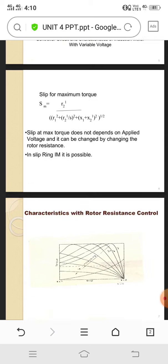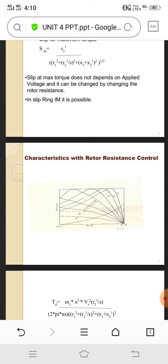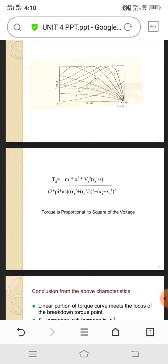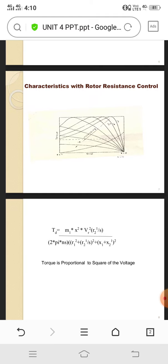Then we have to move to the characteristics of rotor resistance control. This rotor consists of various ranges of resistance, and each resistance is used to reduce the maximum loss across that induction motor.